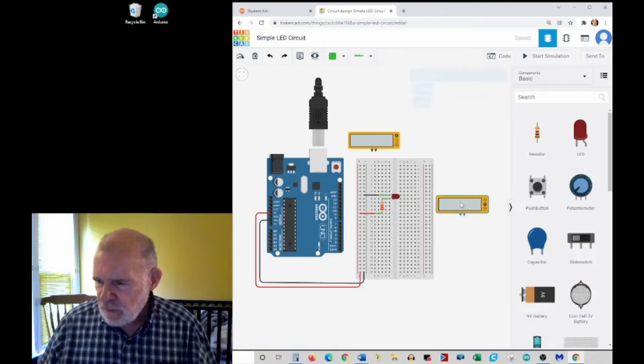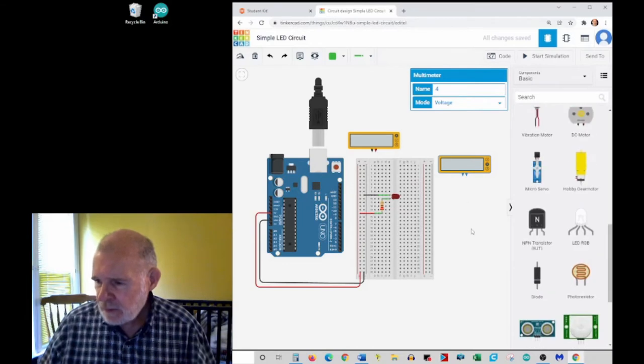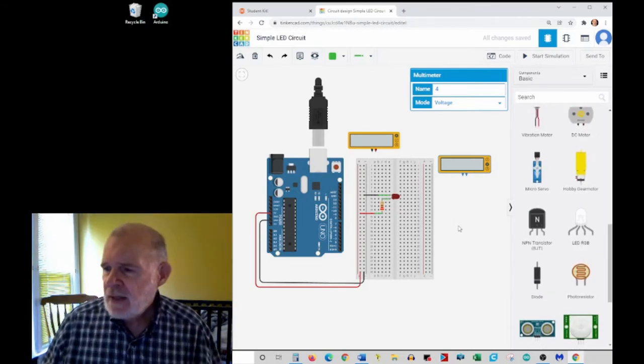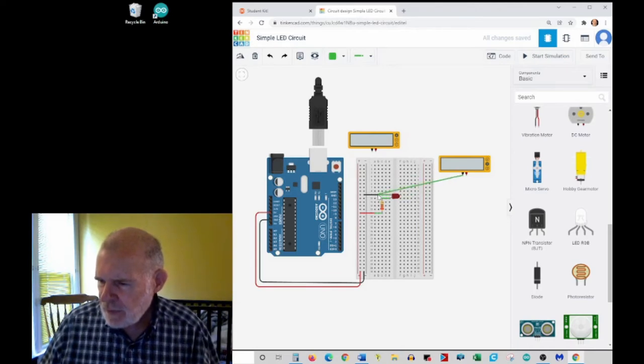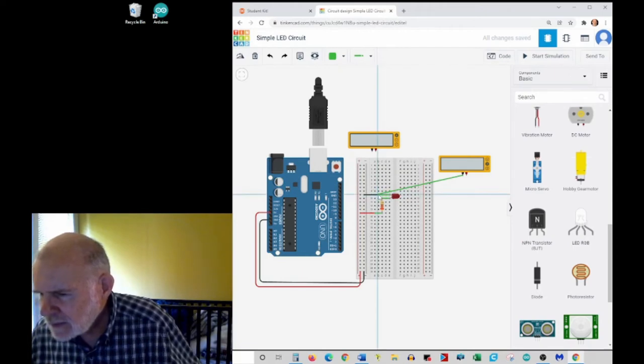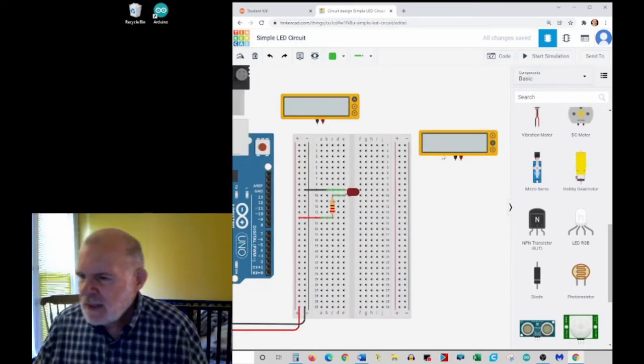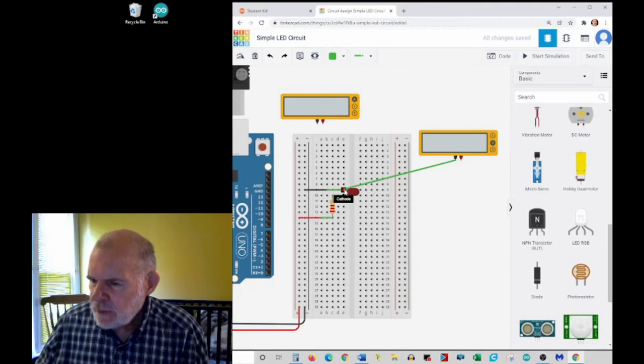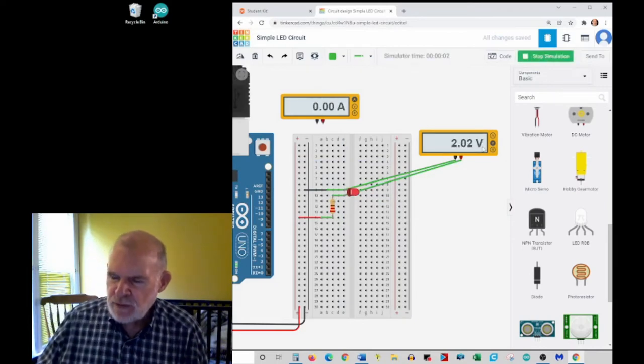This is our simple LED circuit with an LED and a resistor. If I want to measure voltage, I bring out of my kit of parts the equivalent of a multimeter that measures voltage. So I could connect the wires here from both ends of my component. When I start the simulation, it says there's two volts.